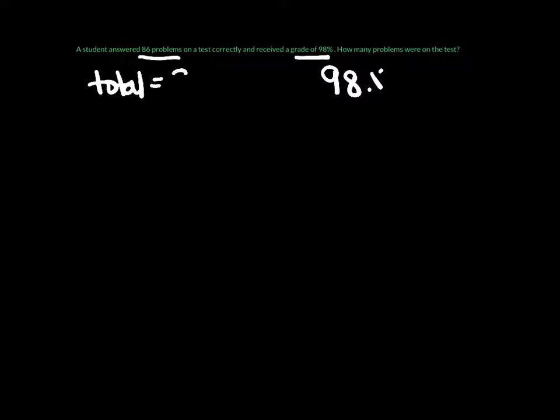A student answered 86 problems on a test correctly and received a grade of 98%. How many problems were on the test? We have 98% and the number 86. Is that the total or the smaller piece? From reading the question — a student answered 86 problems correctly, how many problems were on the test — the total is what we're looking for. So 86 problems is the piece, and the total number of problems is our unknown.